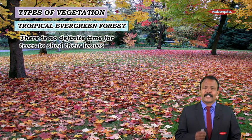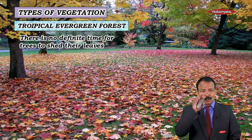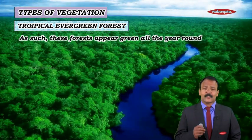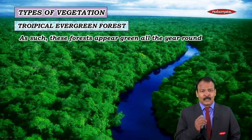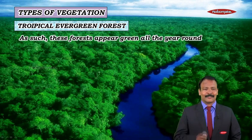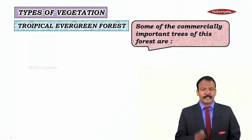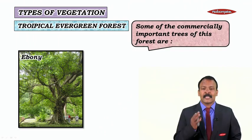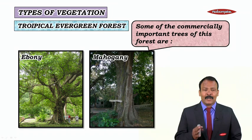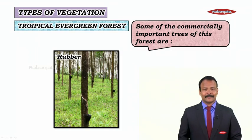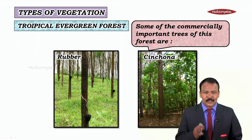There is no definite time for the trees to shed their leaves, and as such these forests appear green all the year round. Some of the commercially important trees of these forests are Ebony, Mahogany, Rosewood, Rubber, and Chinchona.